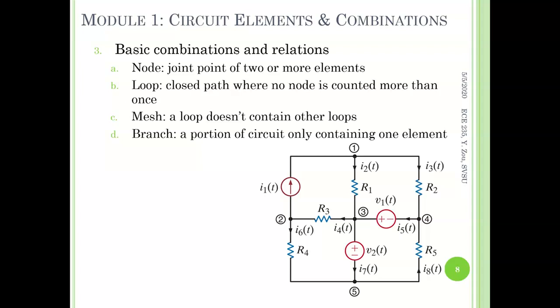There are some basic terms that need to be clarified at the beginning. The first one is the node. The node is a join point of two or more elements. From this given example circuit, we can count how many nodes.